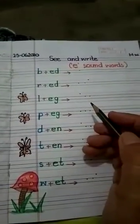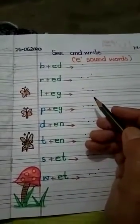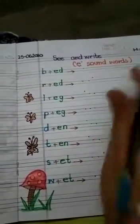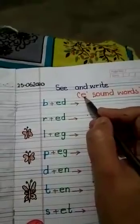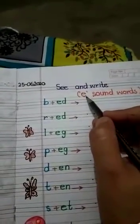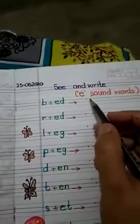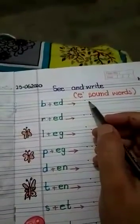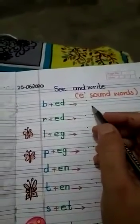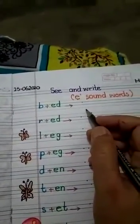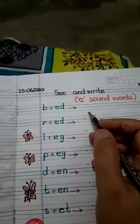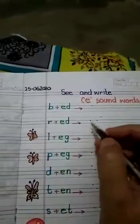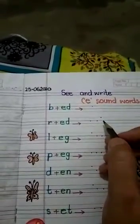Good morning dear students. Are you ready for your new work today? We are here with the second vowel, that is E, and the sound of E is 'e'. Letter E is the second vowel of the alphabets and its phonic sound is 'e'. This is the short sound of E, and the long sound of E is simply its name, 'E'.